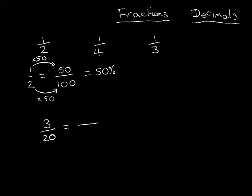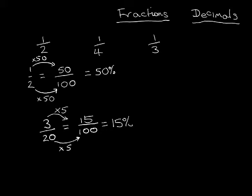So what we need to do is change three over twenty to something over a hundred. How do you get from twenty to a hundred? Five — so times by five. If you did the same thing for that three, what's three times five? Fifteen. Well done. So what's that fraction as a percentage? Fifteen over a hundred is how many percent? Fifteen percent. Good.